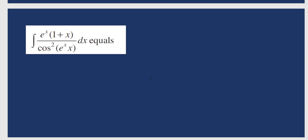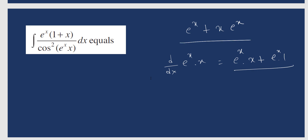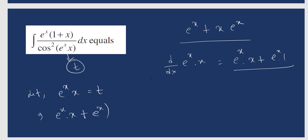Now see: integration of e to the power x into (1 + x) dx. Basically, e^x into x — if we differentiate e^x into x, we get e^x (constant) differentiated: since the derivative of e^x is e^x, this gives e^x·x plus e^x·1. So it is a product of two functions. So let t equal e^x into x. Differentiating: dt equals the same expression dx, so dt replaces e^x(1+x)dx.